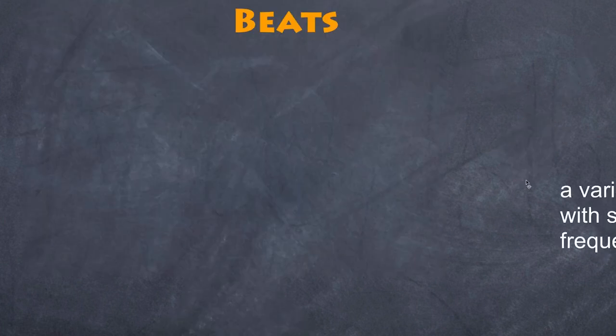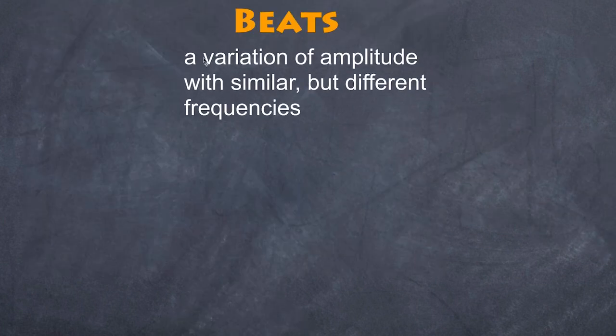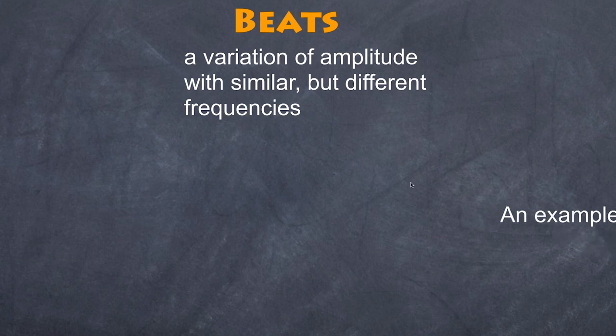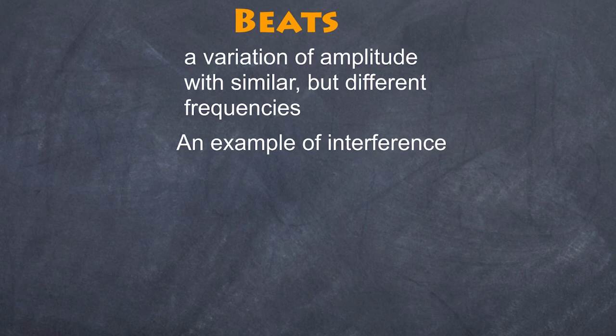Let's summarize. Beats are basically a variation of amplitude with similar but nonetheless slightly different frequencies. They are an example of interference, both constructive and destructive. Finally, the frequency of the beats is equal to the difference between the two frequencies, the modulus thereof - in other words, you won't have a negative value.